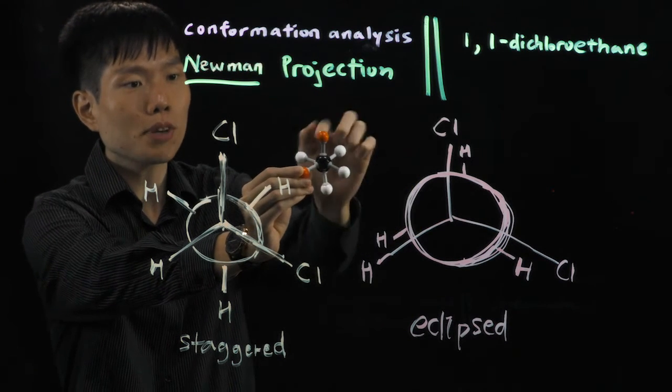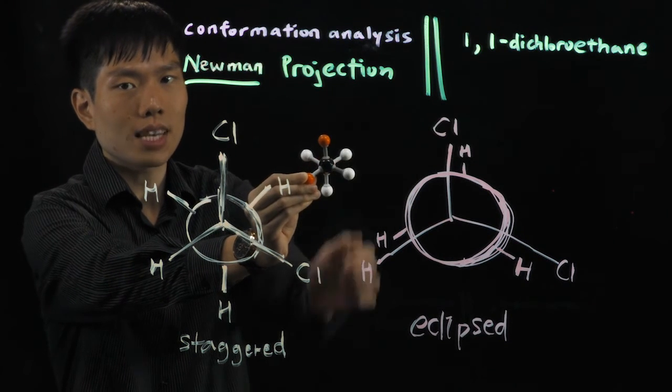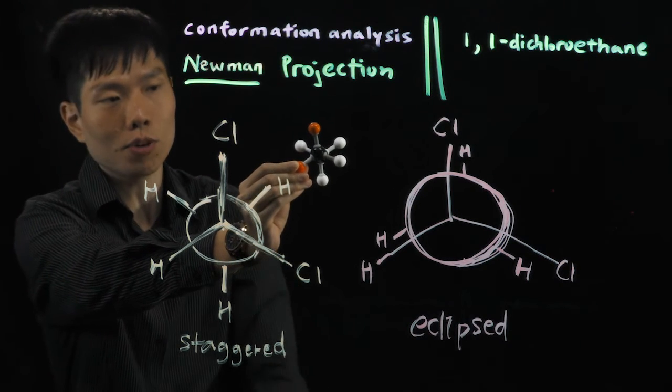Because they are bonded to the same carbon atom, whereas I change the methyl group at the back. Do you notice? It makes no difference. And hence, you only have one staggered conformer.